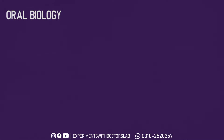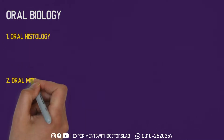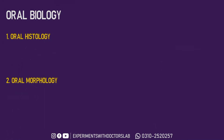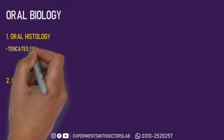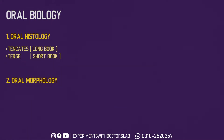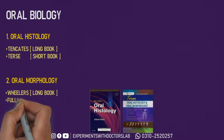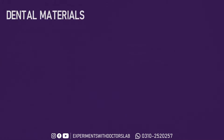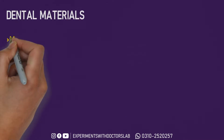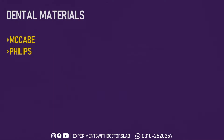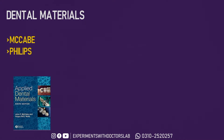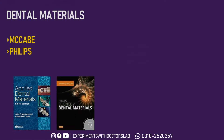Let's talk about Oral Biology. Oral Biology has two divisions: Oral Histology and Oral Morphology. For Oral Histology, the long book is Tencate's and the short book is Ten Cate's short edition. For Oral Morphology, the long book is Wheeler's and the short book is Fuller's. For Dental Materials, we have two books: McCabe and Phillips. The best approach is to study McCabe, and some popular exam topics can be read from Phillips, as Phillips is more detailed while McCabe is more compact.